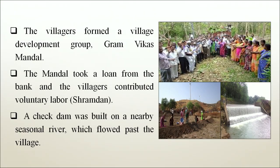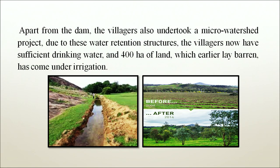The villagers formed a village development group called Gram Vikas Mandal. The Mandal took a loan from the bank and the villagers contributed voluntary labour — Shramdan. A check dam was built on a nearby seasonal river which flowed past the village. Apart from the dam, the villagers also undertook a micro watershed project. Due to these water retention structures, the villagers now have sufficient drinking water and 400 hectares of land which earlier lay barren has come under irrigation.